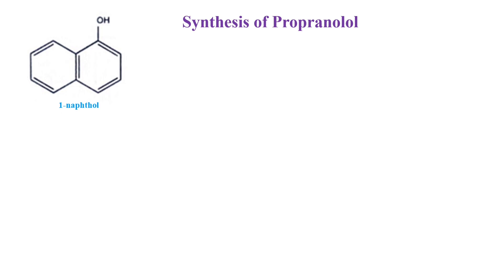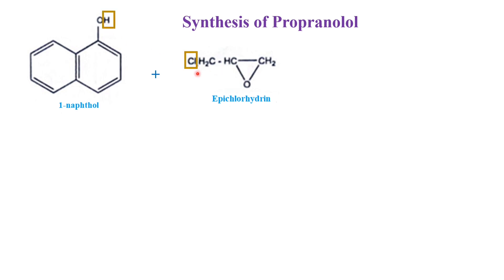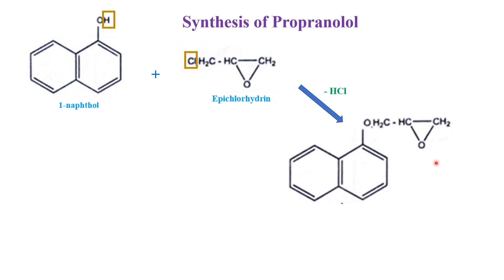Now we will see the synthesis of propranolol. For the synthesis, we have taken the parent compound as 1-naphthol, where the hydroxy group is attached at the first position — that is why it is called 1-naphthol or alpha-naphthol. This is treated with epichlorohydrin. The H combines with the Cl and is removed as HCl, so the epoxide group is attached with the oxygen and we get the intermediate.